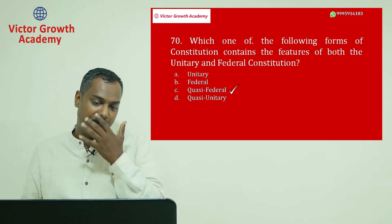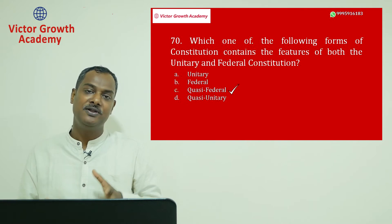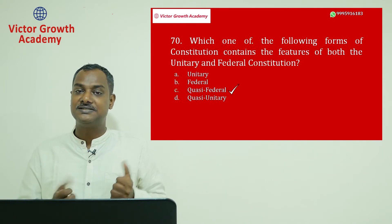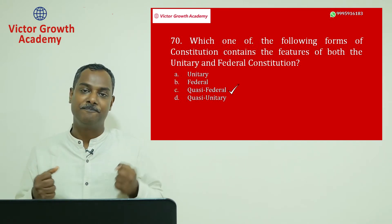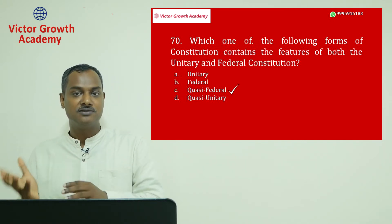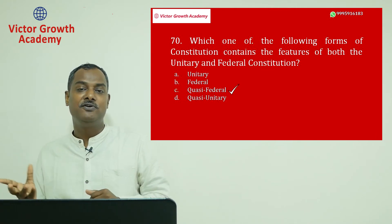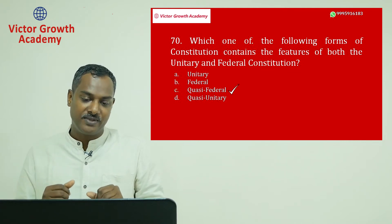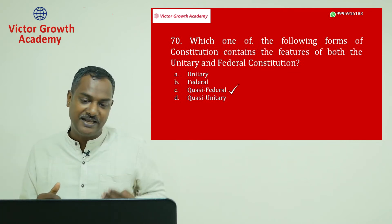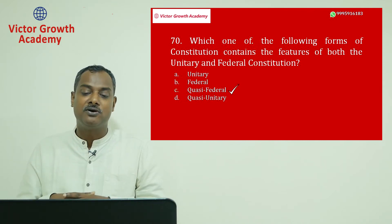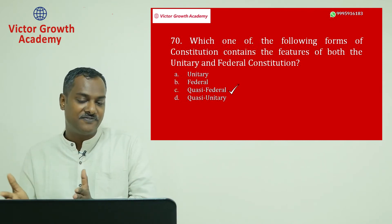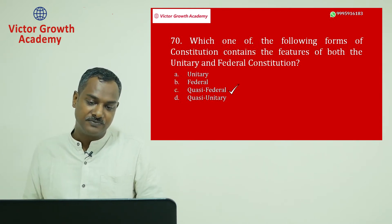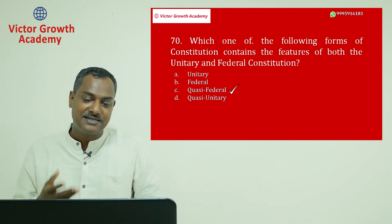India has unitary features such as single constitution and single citizenship, and federal features like written constitution, bicameralism, and judicial review. So India has a combination of federalism and unitary features. The answer is C — though quasi-federal (D) could also be argued. The appropriate answer is C.